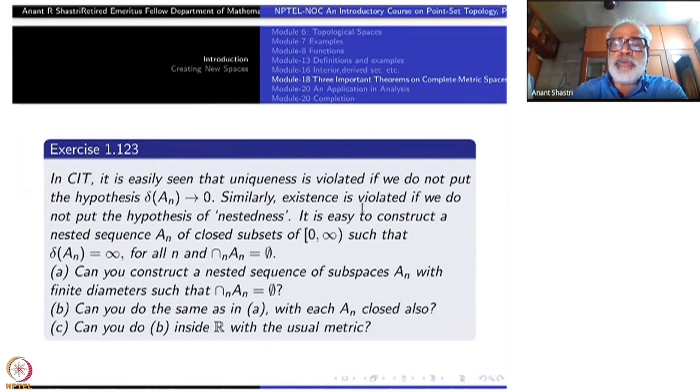Similarly, existence itself is violated if we do not put the hypothesis nested. If you take arbitrary subsets F_1, F_2, F_n without any relation between them, maybe half of it is contained or they are disjoint and so on. The intersection can be easily empty. That is not very surprising. The third comment I make is here.